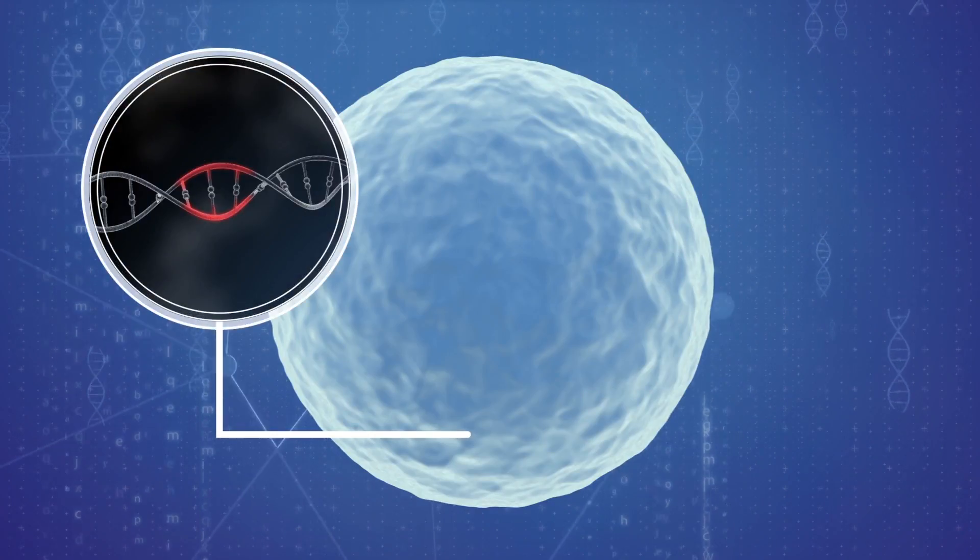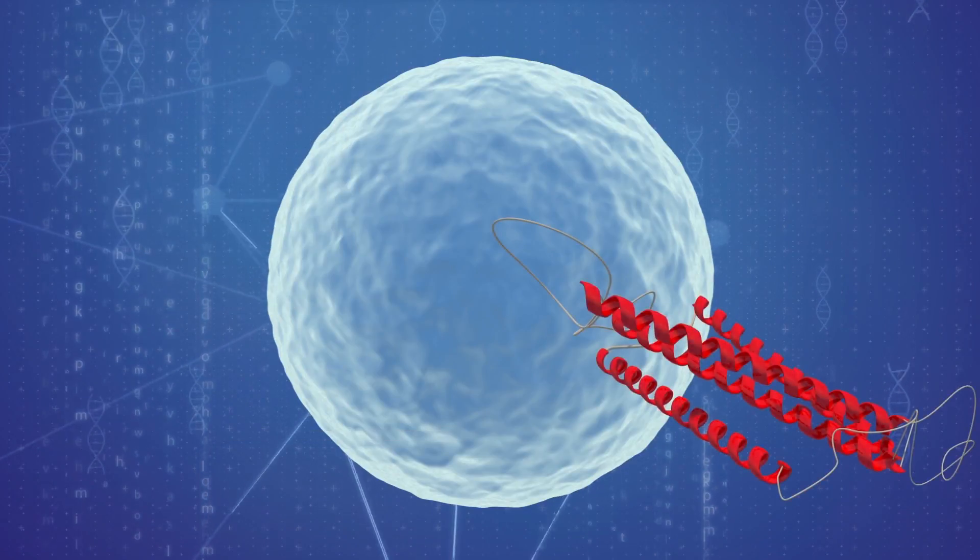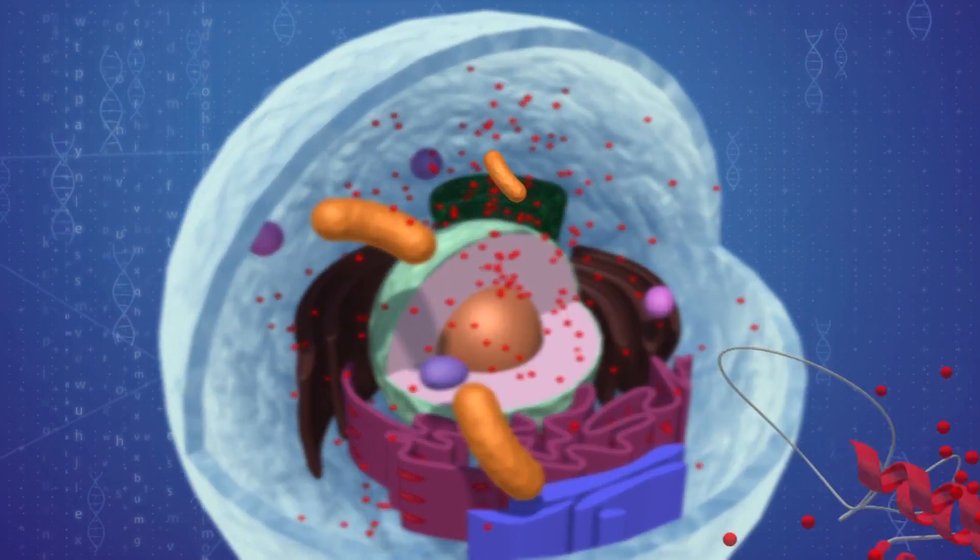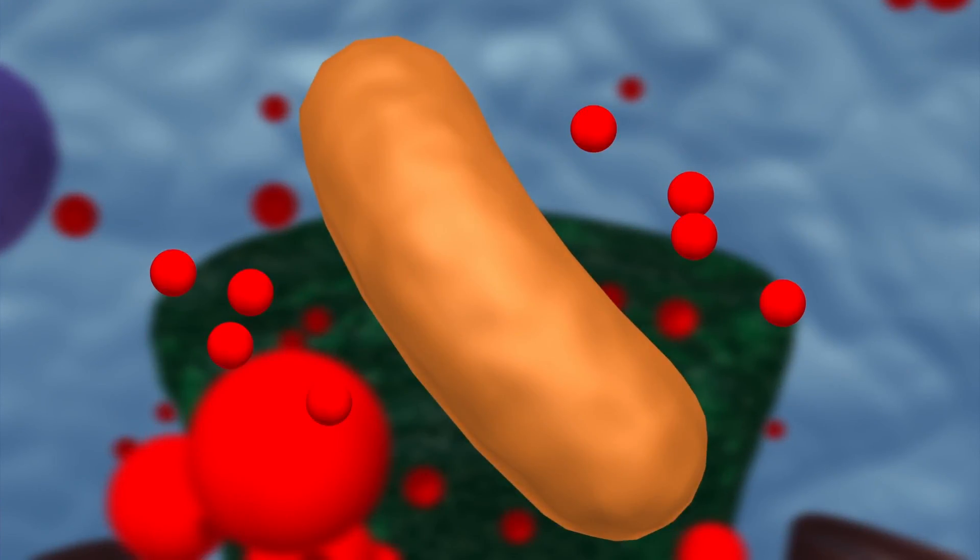When cell damage is detected by P53, it activates the LIF6 gene, which in turn produces a protein that pokes holes in the target mitochondria and causes it to die.